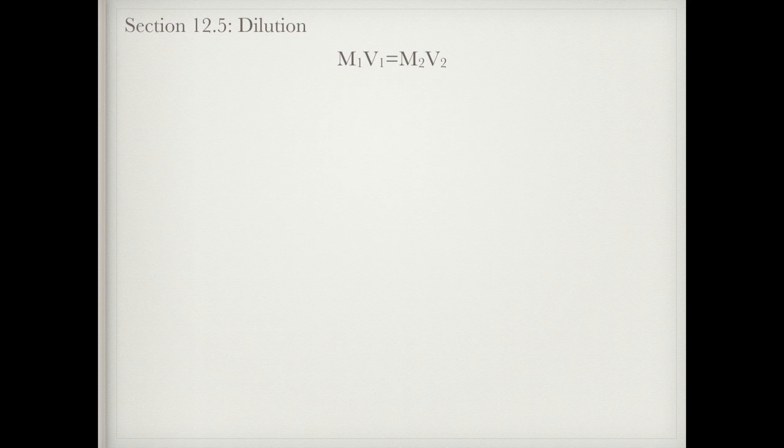The next type of creating a solution is a dilution. This is when I have a concentrated solution — for example, a 6 molar solution of hydrochloric acid in the back — and I need to create a less concentrated solution. The formula I'm going to use for this is M1V1 equals M2V2.